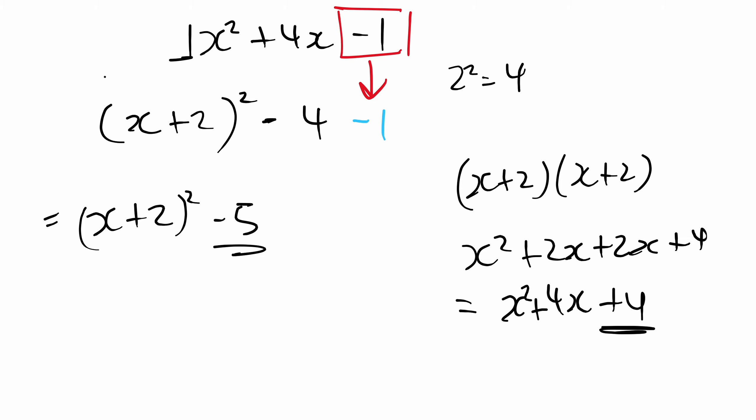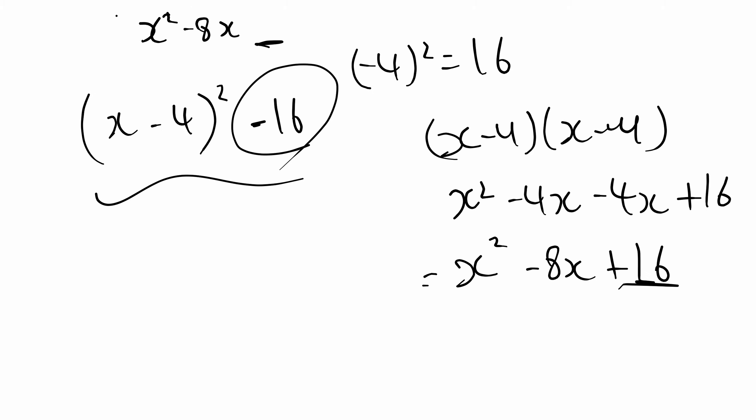In the next video, we'll look at when the coefficient of x squared does not equal 1. So up till now, we always had just 1x squared. Over here, 1x squared, 1x squared. But what if the coefficient is, for example, 2x squared something something something? What would we do? Because the process is slightly different. Check the next video for this.